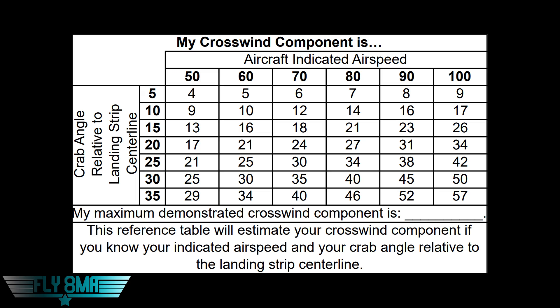We reference this chart and we can say about 24 miles per hour is probably the maximum demonstrated crosswind component. Now, this in no way, shape, or form means that you can land your airplane in 24 miles per hour of direct crosswind component — it doesn't mean the aircraft is even capable of it. But it's a really great starting point for an aircraft that's been heavily modified from its original state and the POH is no longer valid, or perhaps it's a homebuilt aircraft and there's really no data out there for it, the data has been lost, or it's too old to have ever had that data in the first place. So this is a great chart to start with.